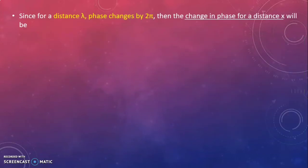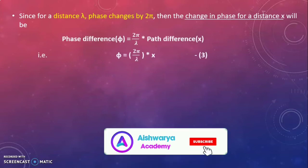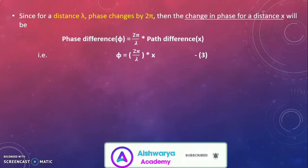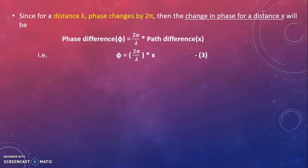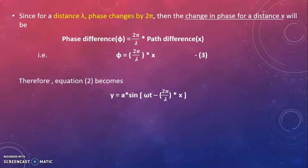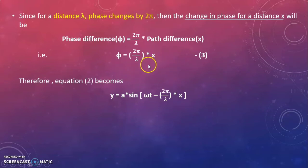Since for a distance λ the phase changes by 2π, the change in phase for a distance x will be: phase difference = (2π/λ) × x. Therefore equation 2 becomes y = a sin(ωt − (2π/λ)x), where we have replaced φ with (2π/λ)x.